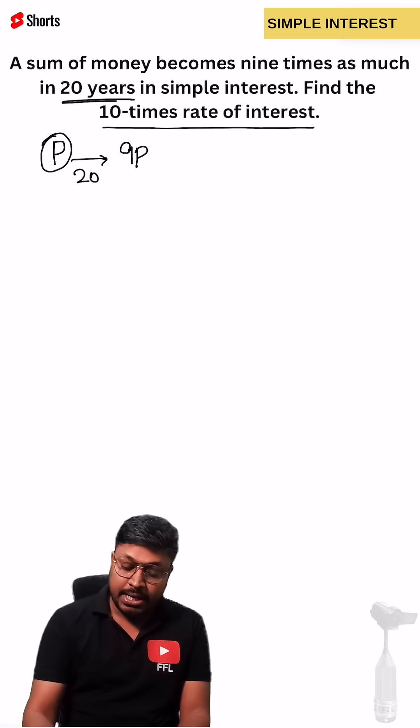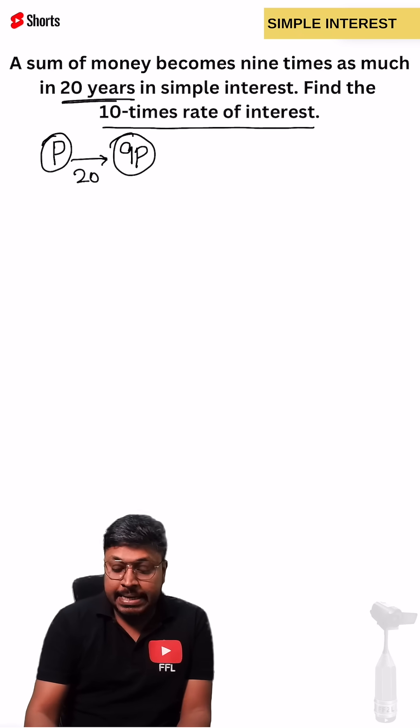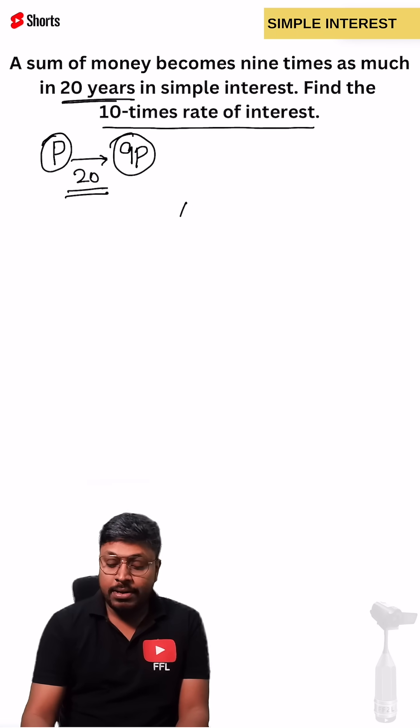See, the amount they have invested is not given, but this amount becomes nine times in 20 years. We know the basic formula: overall amount equals principal plus interest.